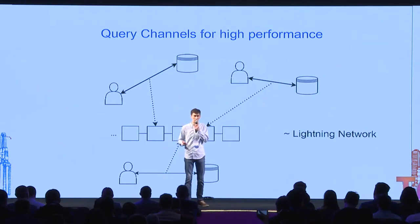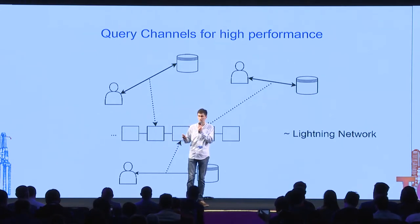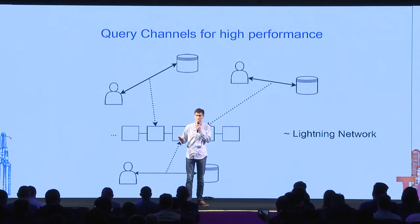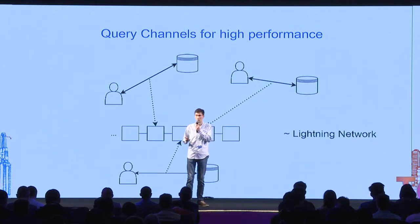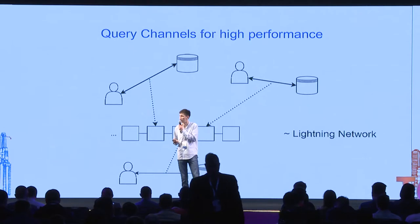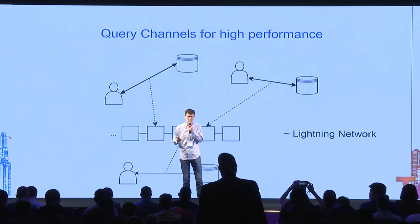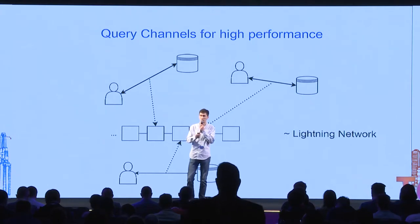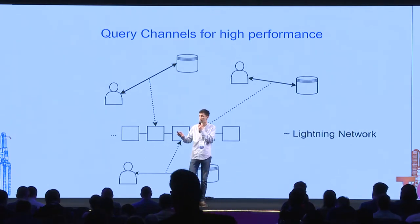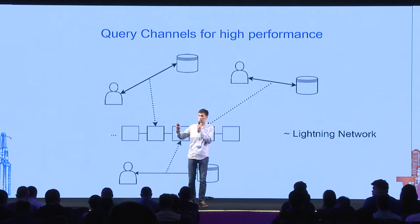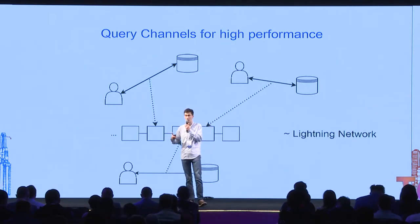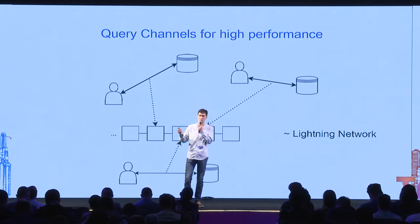The next challenge is performance. In the traditional world, databases can process thousands of requests per second on a single machine, while current blockchains give you only a few dozen transactions per second. That's why we need to create direct communication channels between clients and the nodes that keep data, and only periodically timestamp the results to the blockchain — similar to how the Lightning Network works, where direct transactions happen between two parties and only the results go to the global chain.